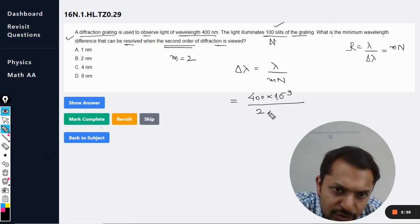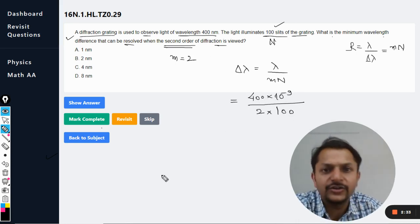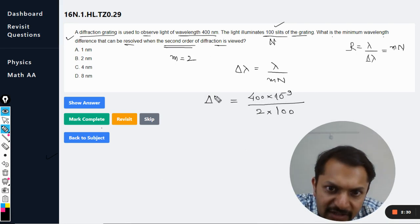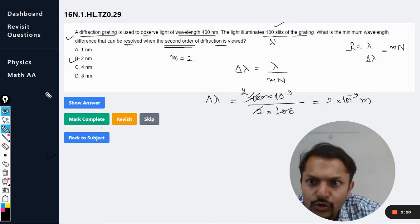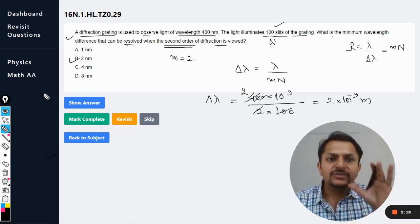What is M? 2. And what is N? 100. We just plug in the values and we find the value of delta lambda. So this is 100 and this cancels out, it is 2, so it is 2 times 10 power minus 9 meters. So 2 nanometers is the answer.